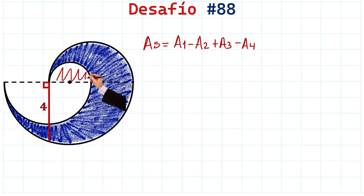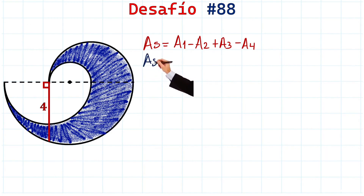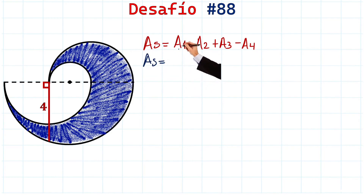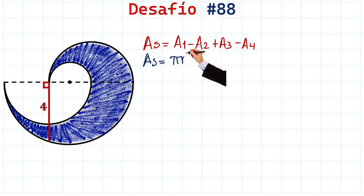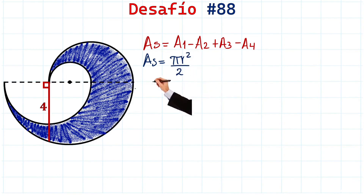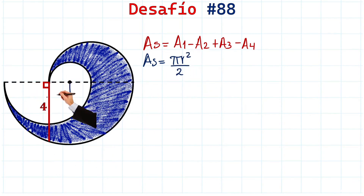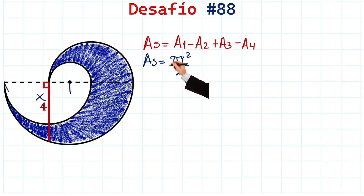So everything is clear — let's continue. The shaded area equals Area 1. Since all areas are semicircles, each is given by π times radius squared over 2. We'll call the radius of the large semicircle x — from here to here it will be x. So here it's not r but x.